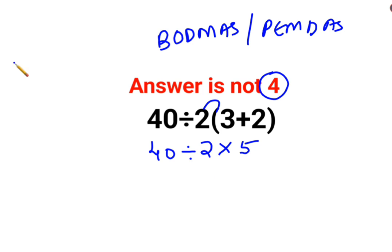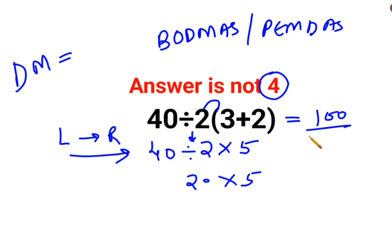Please remember division and multiplication hold equal precedence. So in sums like these, you need to go from left to right. Whatever operation happens first on your left hand side has to be done first. 40 divided by 2 is 20, multiplied by 5. So the answer for this question is supposed to be 100.